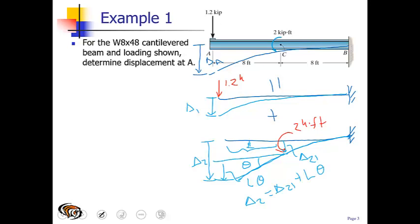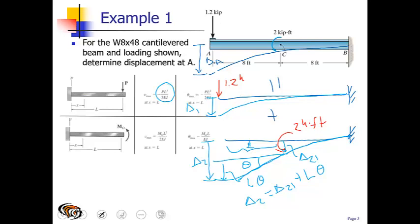For the first case, our displacement is going to equal PL³ over 3EI. For the first case, the L is 16 feet. In the second case, the L is going to be 8 feet for the displacement and 8 feet for the rotation as well. We'll use that theta max to compute the displacement for the second portion.